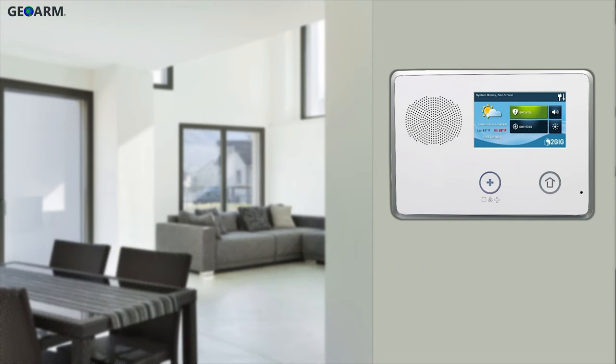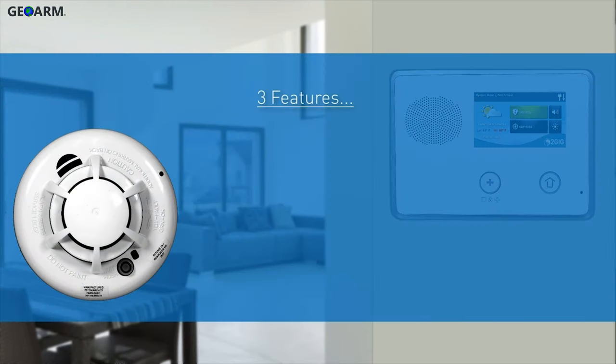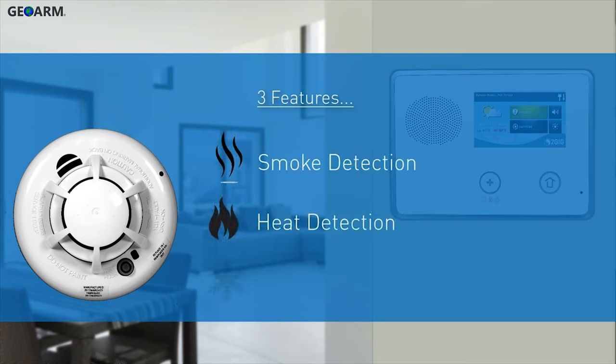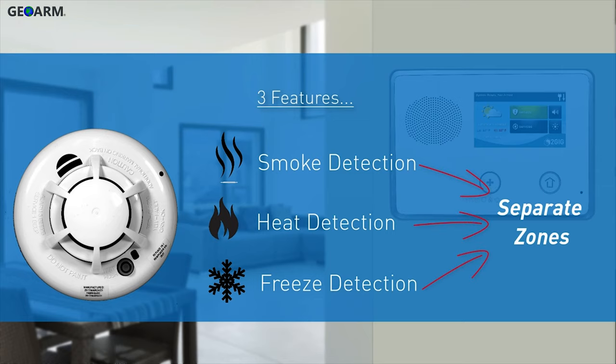The Wireless Smoke Heat and Freeze Detector has three separate features, which include the ability to detect smoke, excessive heat, and excessive cold. Each individual feature must be programmed separately as its own zone.